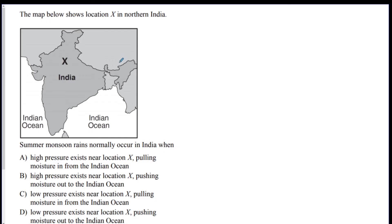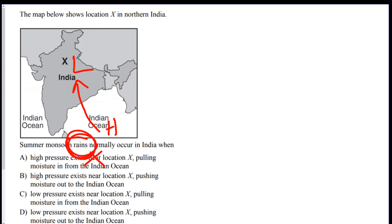Monsoon question: summer monsoon rains normally occur in India when what? If you want rain to happen in India, you need water coming onto the continent. Air moves from high to low. Answer A says high pressure exists near X — no, we have an L there. Low pressure exists near X — yes, pulling moisture in from the Indian Ocean. Answer C.